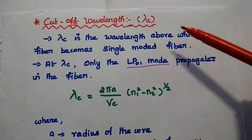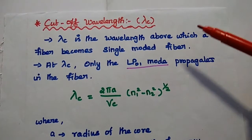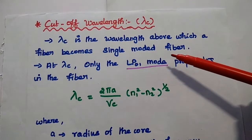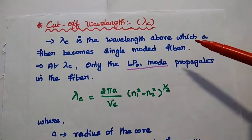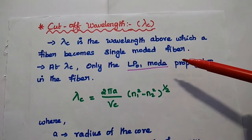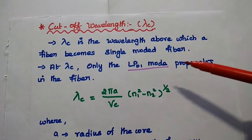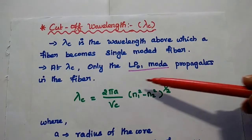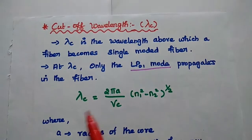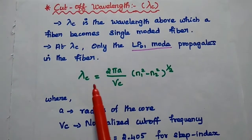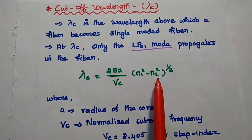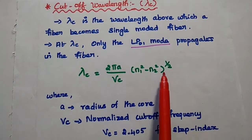The next parameter is cutoff wavelength, lambda C. It is the wavelength above which a fiber becomes a single-moded fiber. That means at this wavelength, it allows only one mode of light to propagate — the fundamental mode LP01. The cutoff wavelength is given as: λC = (2πA / Vc) × (N1² − N2²)^(1/2).